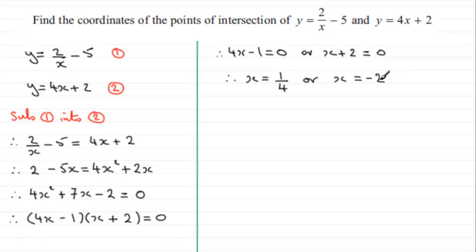So we've got our 2x values. We now just need to get the corresponding y values. And I've got a choice here. I can substitute x equals 1 quarter either into equation 1 or 2. It's up to you. I'm going to substitute into 2, though, because it just doesn't have a fraction. So we'll just say here, x equals 1 quarter into equation 2.